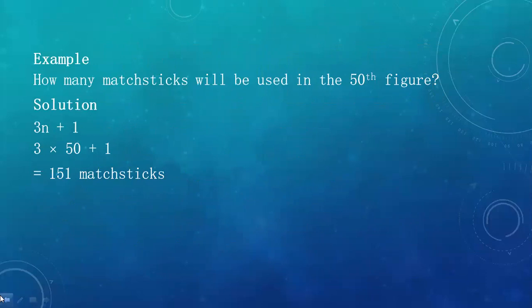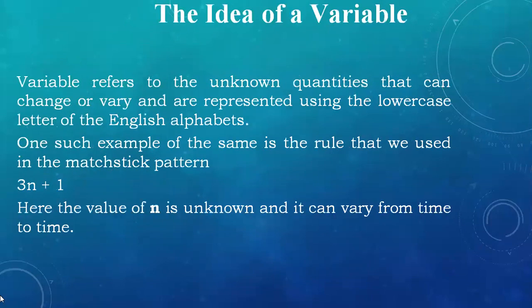For example, how many matchsticks will be used in the 50th figure? The solution is 3n plus 1. In place of n, we use 50. So our answer is 3 times 50 plus 1, which equals 151 matchsticks. Another example: how many matchsticks will be used in the 100th figure? We use the same formula 3n plus 1, which gives 3 times 100 plus 1, that is 301.